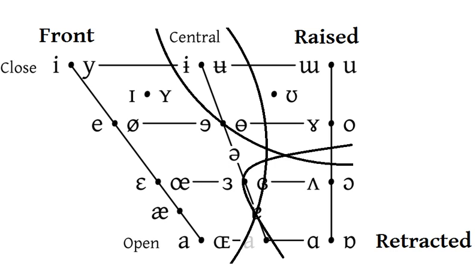This contrasts with consonants, which have a constriction or closure at some point along the vocal tract. In the phonological definition, a vowel is defined as syllabic, the sound that forms the peak of a syllable. A phonetically equivalent but non-syllabic sound is a semivowel.